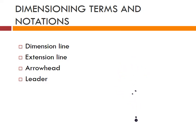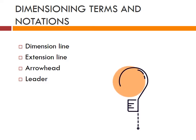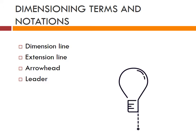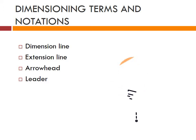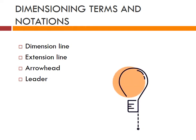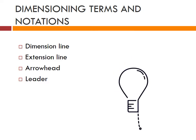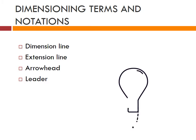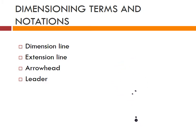Dimensioning terms and notations include dimensional line, extensional line, arrowhead, and leader. Dimensional line is a thin continuous line terminated by arrowheads touching the outlines. Extensional line is also a thin continuous line drawn in extension of an outline. Arrowhead is placed at each end of a dimensional line; its length should be about 3 times its maximum width, and its size should be proportional to the thickness of the outline. Leader or pointer is a thin continuous line connecting a note or dimension with the feature to which it applies.